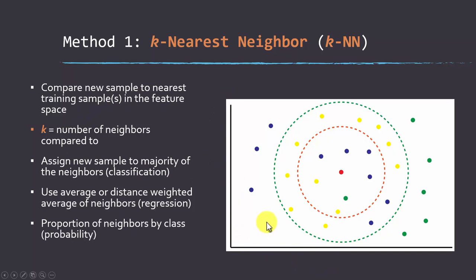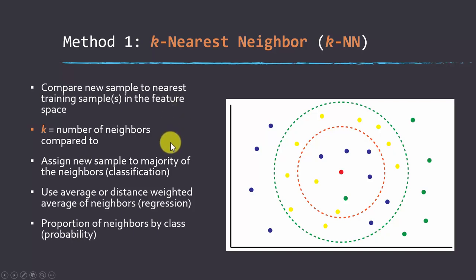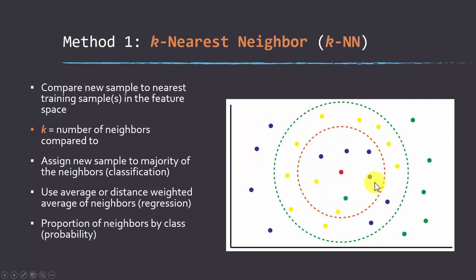For example, in a two-dimensional feature space where the x-axis is variable one and the y-axis is variable two, you can plot all the points in that space. If a red dot represents a new sample, we look at the training samples around it to determine what it would likely be in a categorical context. K is just the number of neighbors to compare that sample to. For classification, it's common to assign the new sample to the majority class of its neighbors. For instance, using seven nearest neighbors — one green, two yellow, and four blue — we would assign the new sample to the blue class.